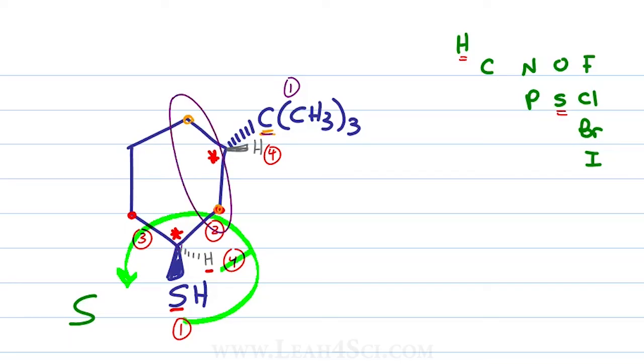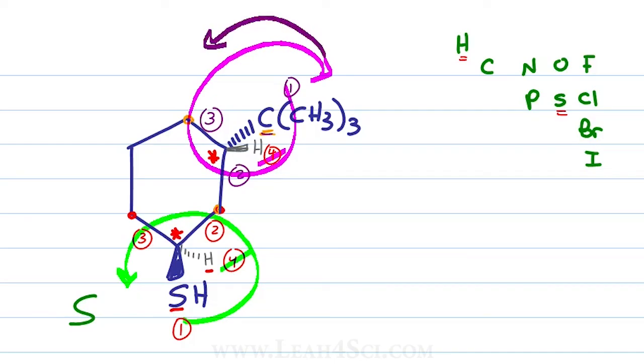However, comparing the two directions around the ring, it's a shorter path to the sulfur making this number 2 and a longer path to the sulfur making this number 3 and now we're good to go. Since number 4 is in the front, we're going to reverse our configuration. So first cross out number 4, trace the path from 1 to 2 to 3, reverse the path because number 4 is in the front and that gives us the S configuration.